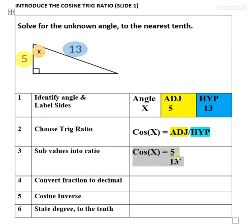Cos(X) = 5/13. Using a calculator to divide 5 by 13, we get Cos(X) = 0.3846. Use four significant digits.